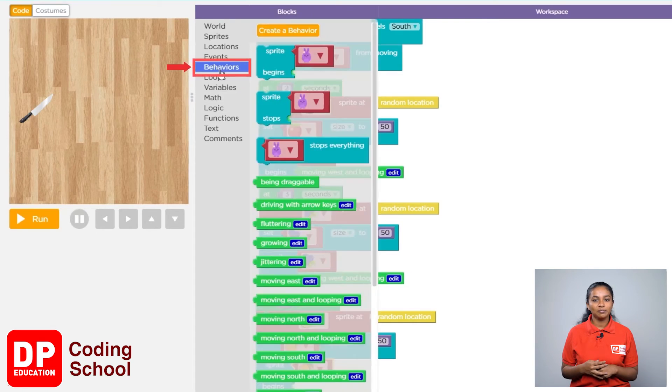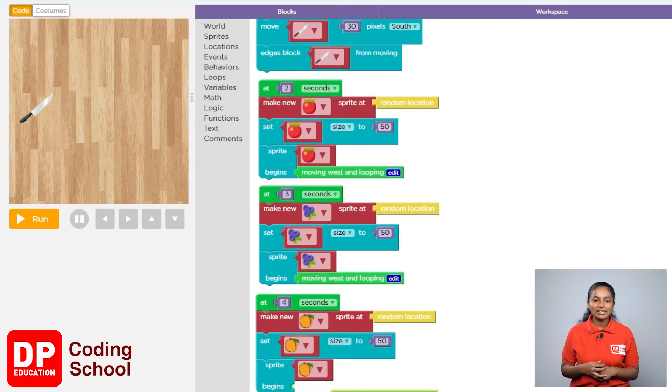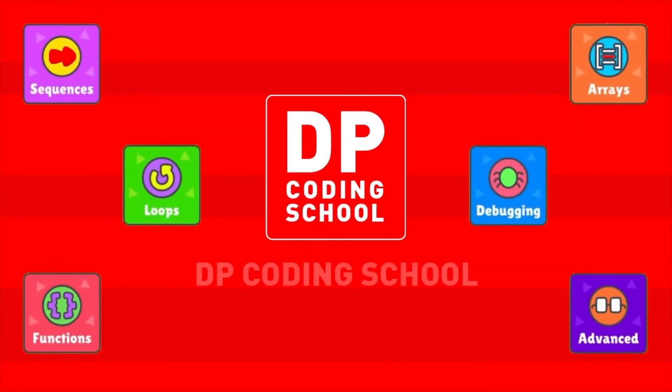Again I click on behaviors. Now the moving east and looping block is dragged and placed in front of begins.